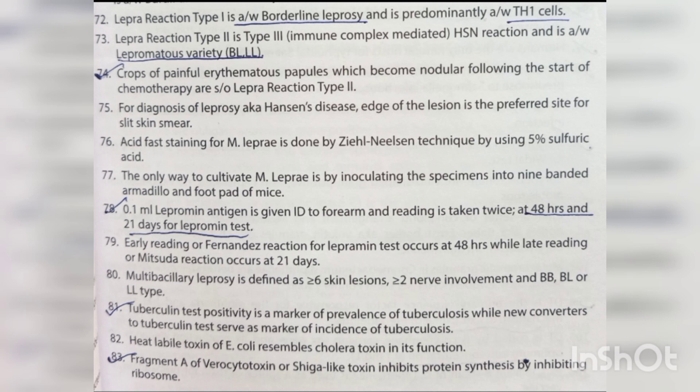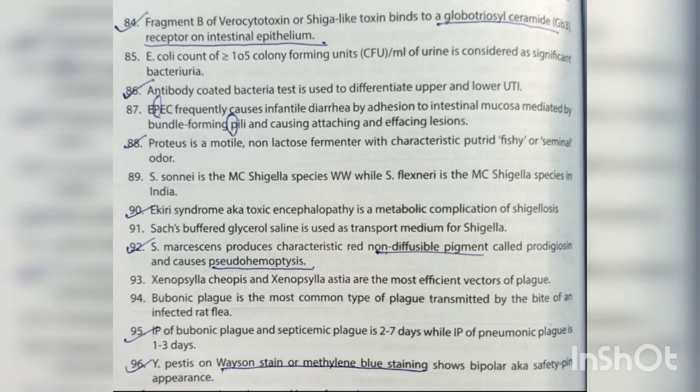Tuberculin test positivity is a marker of prevalence of tuberculosis, while new converters to the tuberculin test serve as a marker of incidence of tuberculosis. Heat-labile toxin of E. coli resembles cholera toxin in its function. Fragment A of verocytotoxin (Shiga-like toxin) inhibits protein synthesis by inhibiting ribosomes.